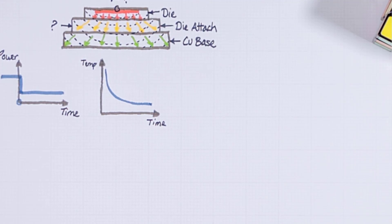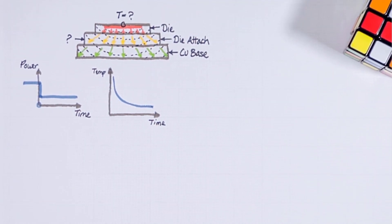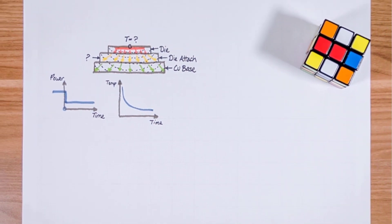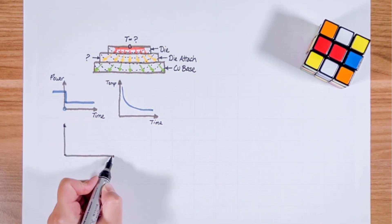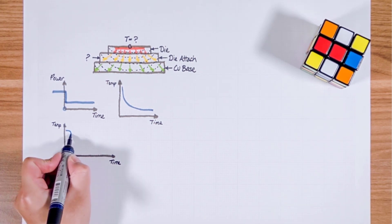In the case of a thermal system we are curious to see the properties of very small package features such as a die attach as well as the big ones like a cold plate. We prefer to show the curve over a logarithmic time scale like this.